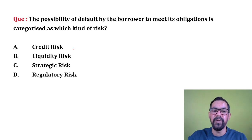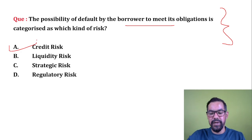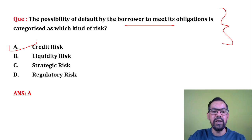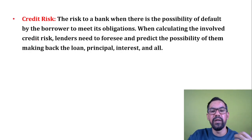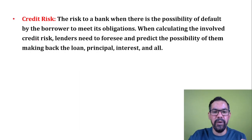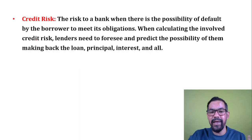Next question: the possibility of default by a borrower to meet its debt obligation is categorized under credit risk. When a bank gives a loan to a customer and that customer becomes a defaulter, that kind of risk is known as credit risk. Banks use different tools and rating agencies to overcome these problems — like CIBIL (Credit Bureau of India Limited). For individual ratings we have ICRA and CARE; for economy ratings we have Moody's and Fitch, and even IMF and World Bank provide ratings for economies.